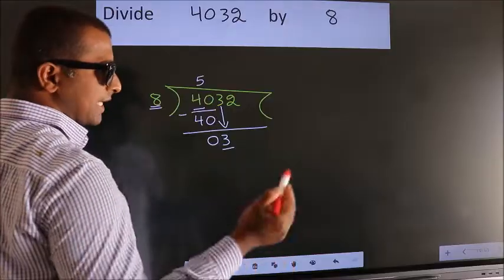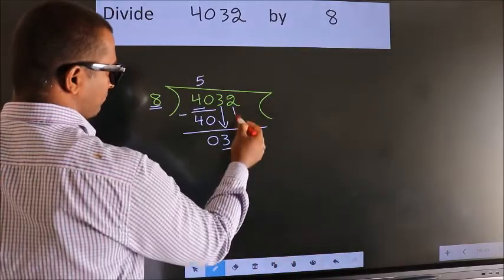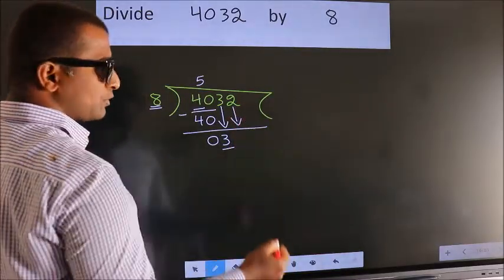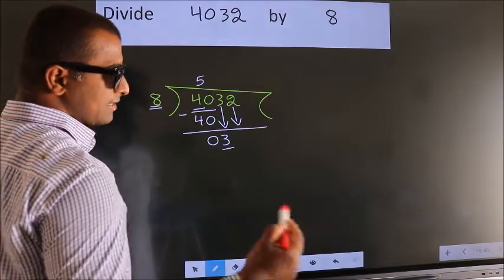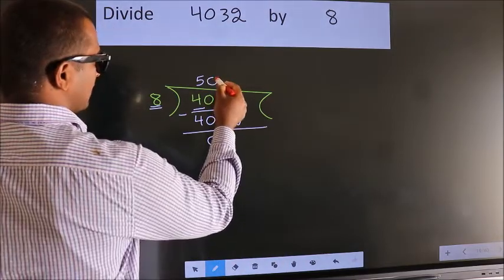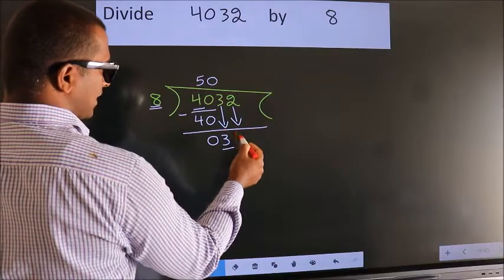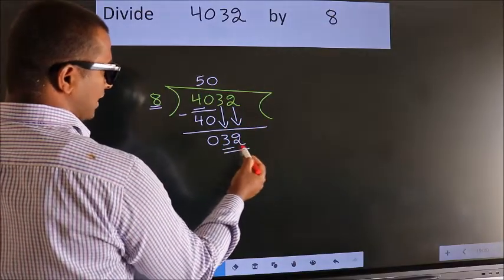So we should bring down the second number. And the rule to bring down the second number is put 0 here, then only we can bring down this number. So 32.